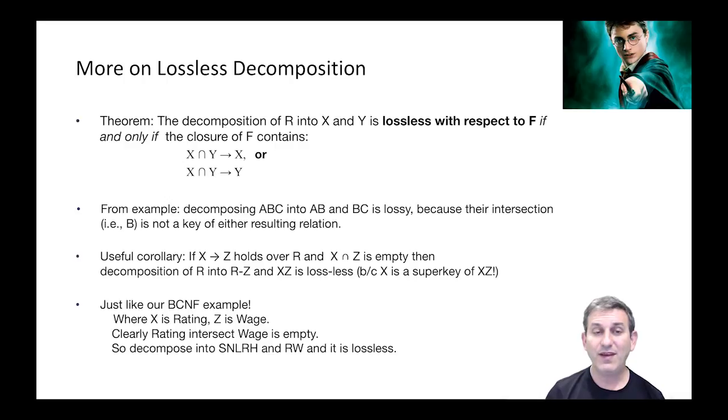Here's a useful corollary to our theorem. If X determines Z holds over R and X intersect Z is empty, so the left-hand side and the right-hand side don't share attributes, then the decomposition of R into R minus Z (take away the right-hand side of the FD) and XZ (just the columns from the FD) is lossless because X is therefore a super key of XZ. That's exactly the decomposition we were using in our BCNF example. X is rating, Z is wage. R determines W and R intersect W is empty. So we can decompose into SNLRH and RW, and by this corollary that is lossless because R is a super key of RW.